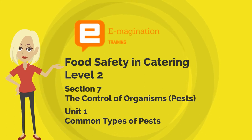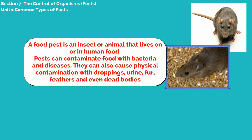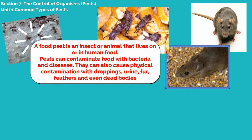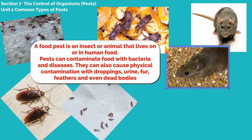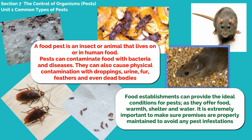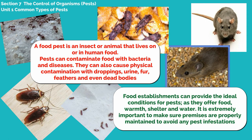In this first unit we are looking at common types of pests. A food pest is an insect or animal that lives on or in human food. Pests can contaminate food with bacteria and diseases. They can also cause physical contamination with droppings, urine, fur, feathers and even dead bodies. Food establishments can provide the ideal conditions for pests as they offer food, warmth, shelter and water. It is extremely important to make sure premises are properly maintained to avoid any pest infestations.